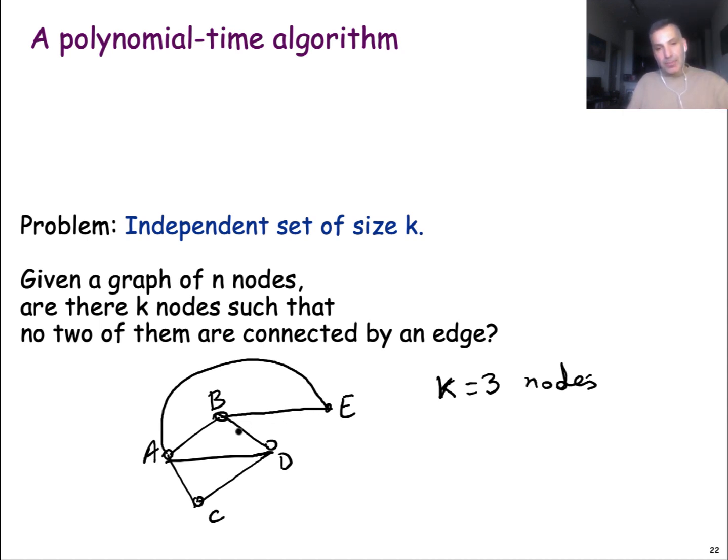can you find a subset of k nodes in this graph such that these k nodes are not connected with an edge between them? As you can see in this example, I cannot find three nodes that are not connected with an edge between them. If, however, I pick k equal to 2, then I could find the pair of nodes, say d and e or b and c. These are pairs of nodes that are not connected with an edge.